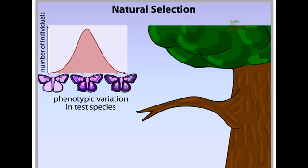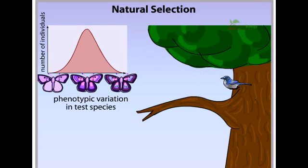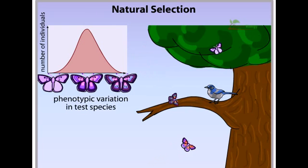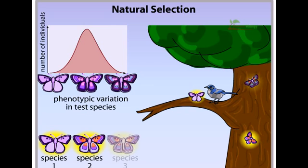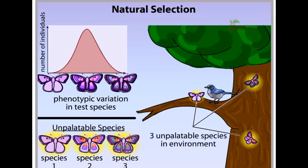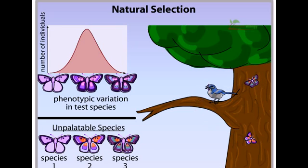The environment includes predators, such as birds, to which individuals of this species are tasty. The environment also includes other butterfly species. One individual from each of three species is shown here. These three butterfly species are unpalatable to birds. After capturing and tasting them, birds learn to avoid eating them.